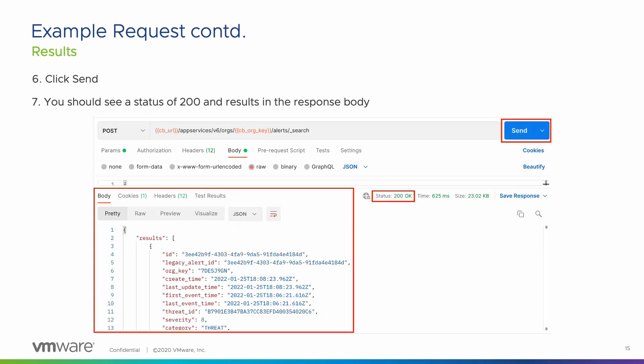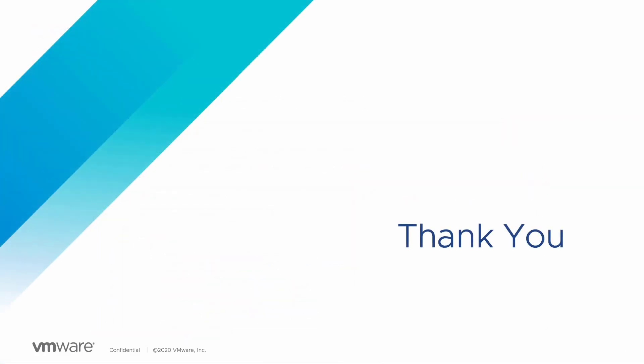Now we are ready to click Send. When the call is complete, you should see a status of 200, signifying that the request was successful. You should also see a list of alerts in the response body. Congratulations on successfully making your first API call using Postman. Our next lesson in the series will be Error Handling and Troubleshooting. Thank you for your time today and I hope this information has been beneficial. I look forward to seeing you in the next video.